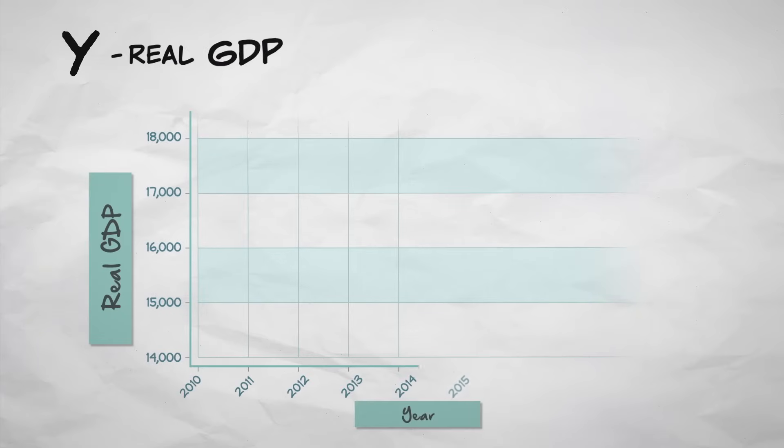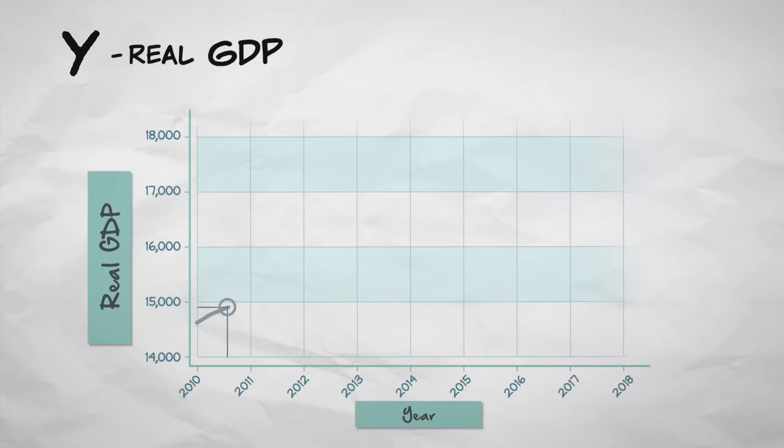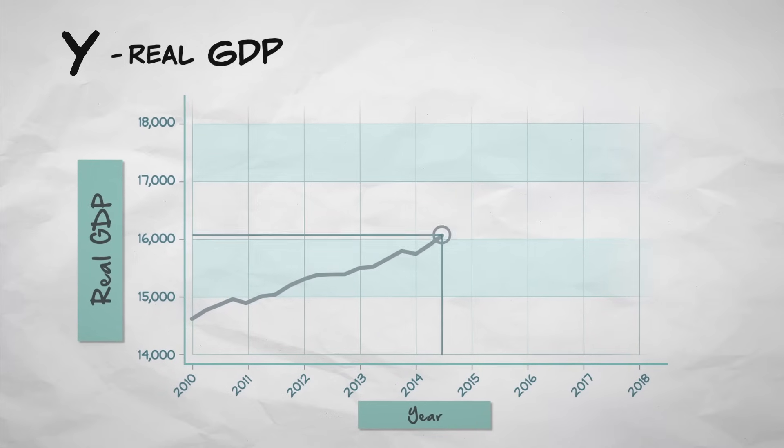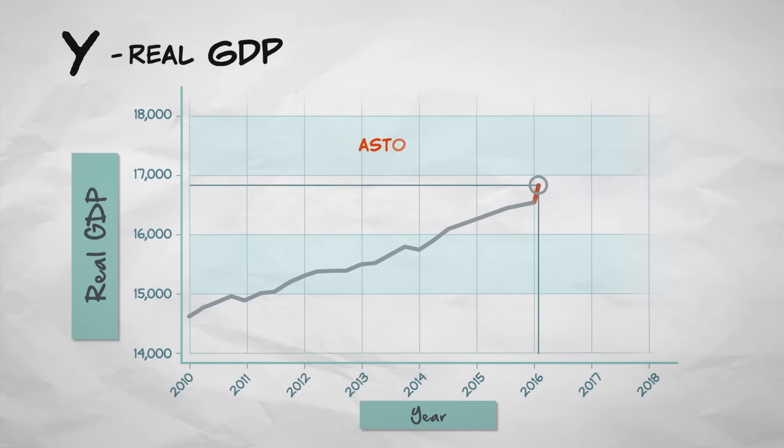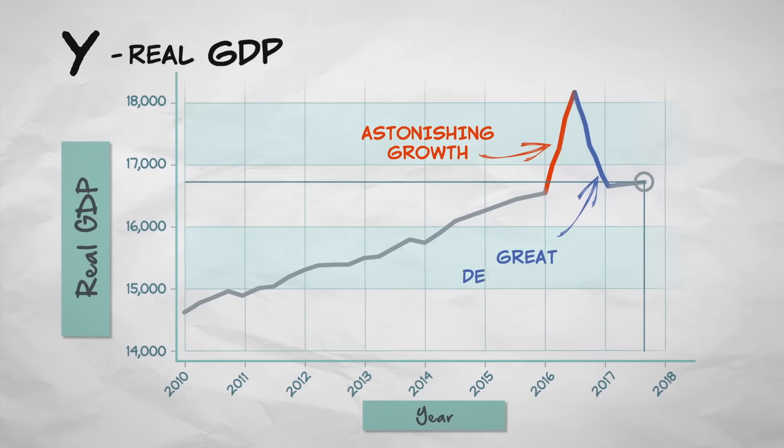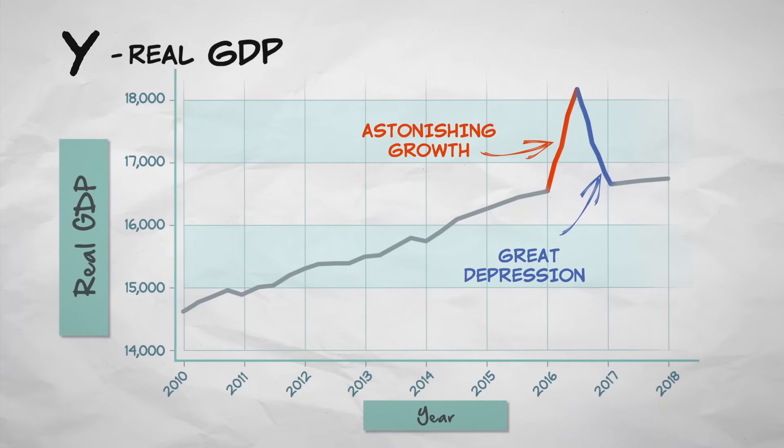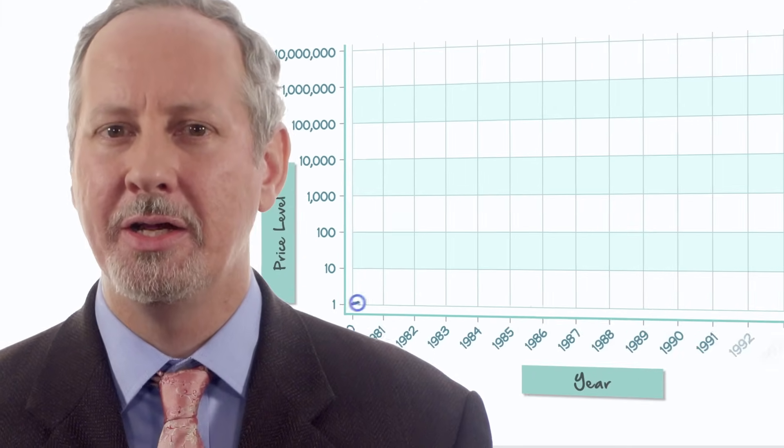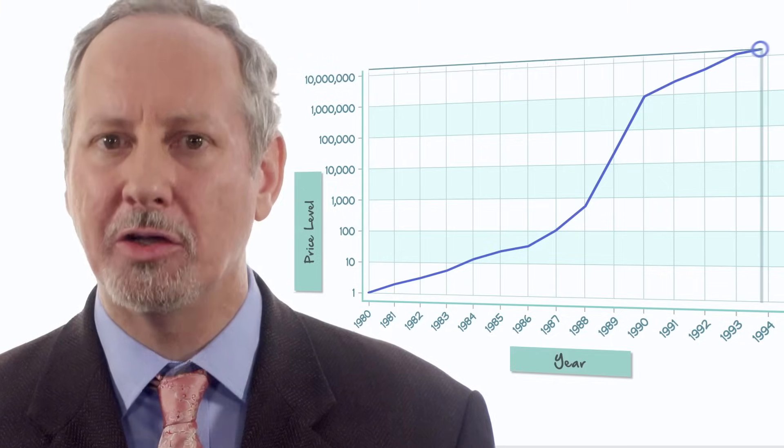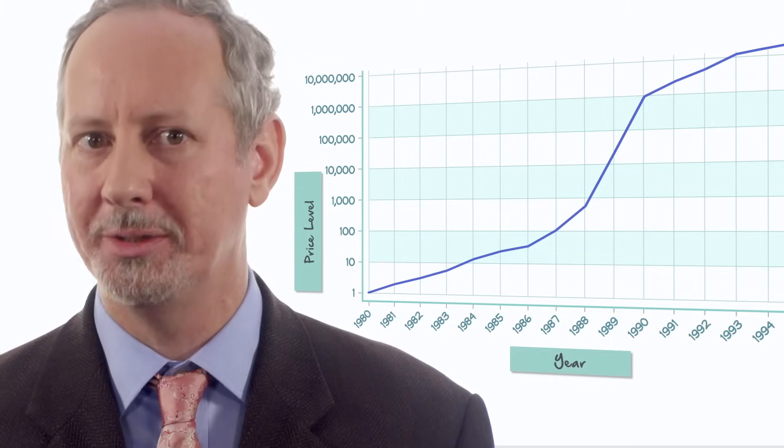Consider y, that's real GDP. Real GDP doesn't vary that much within a year. An increase of 10% in a single year would be astonishing growth, and a fall of 10% would be a very unusual Great Depression. So changes in real GDP don't seem like a plausible candidate for explaining large and sustained changes in prices.